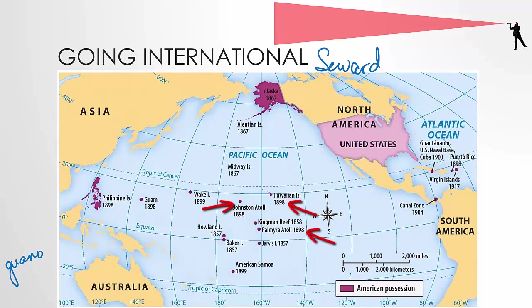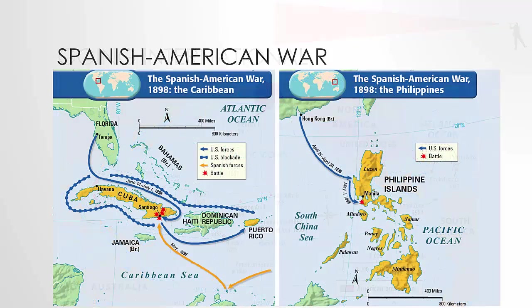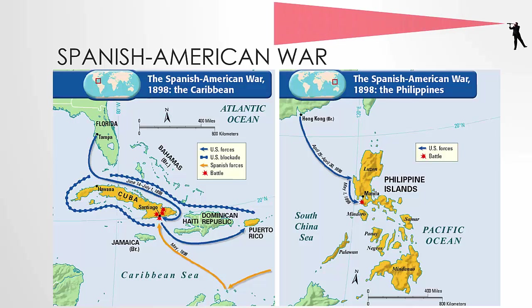The next major year of acquisition is 1898. Some islands were unilaterally taken by the United States. Others, like Guam, Puerto Rico, and the Philippines, were all acquired by the United States from Spain as part of a treaty to end the Spanish-American War. The war was fought in two areas principally — Cuba and the Philippines. Both were Spanish colonies, and both were in the midst of their own revolutions for independence.